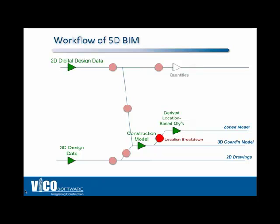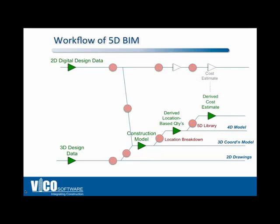The next step is getting ready for cost estimating. On the 2D product line, that's linking those quantities to a cost estimating database. On the 3D line, we link them to what we call a 5D library. It has the cost and assembly information you're used to in estimating, but also task duration-specific information. This means if you're a 2D user, you've now got enough to generate a cost estimate; if you're a BIM user, you've got costs derived from a 3D construction model. The next step in 2D is to prepare a schedule — usually an independent, unconnected task. In the 5D BIM workflow, you derive a flow line schedule from exactly the same model data and 5D library parameters.